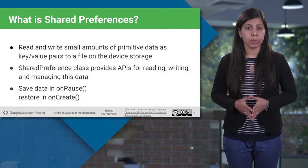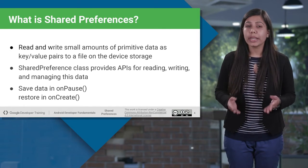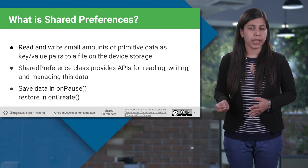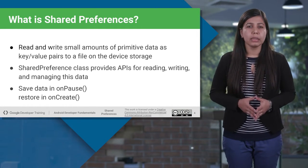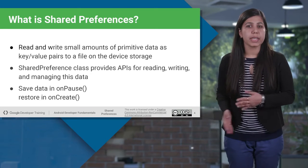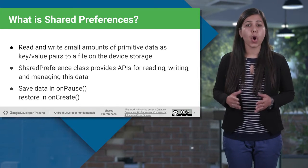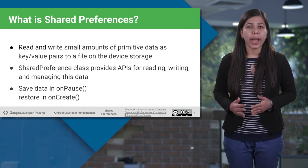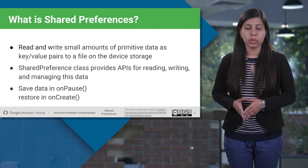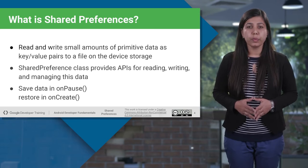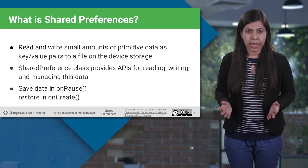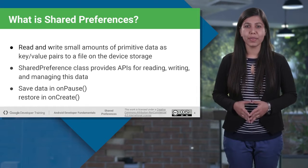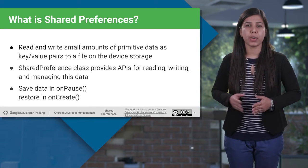Shared Preferences is suitable in different situations — for example, when user settings need to be saved, or to store data that can be used in different activities within an app. Since onPause will always be called before your activity is placed in the background or destroyed, we prefer saving data persistently in onPause, which can then be restored in onCreate of the activity.